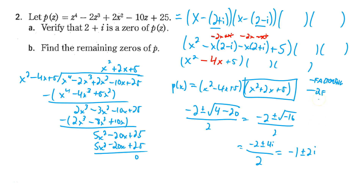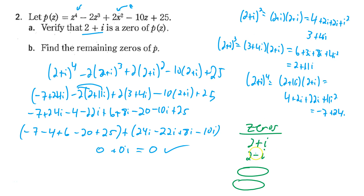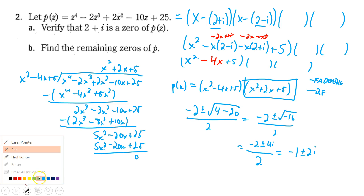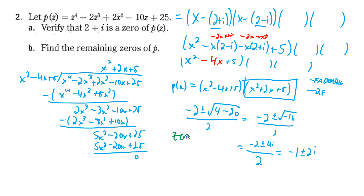At this point we've gotten all of our zeros. From the conjugate roots theorem we had 2+i and 2-i as zeros, and now we have our last two. Our complete list of zeros is: 2+i, 2-i (from our first two factors), and now negative 1+2i and negative 1-2i.